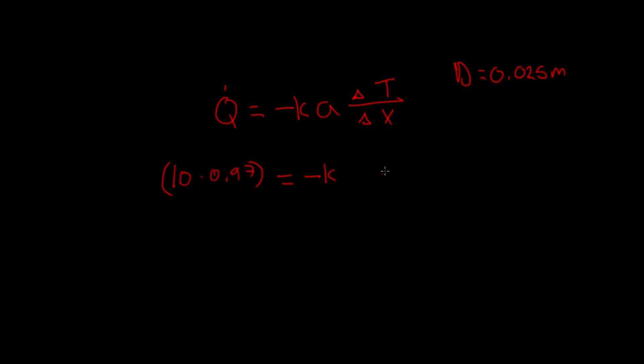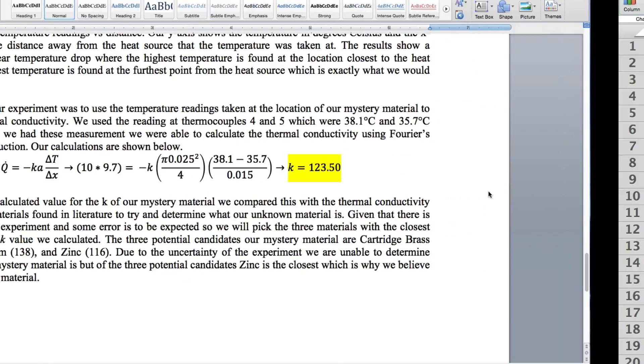Area, we have the diameter, so this is going to be pi times 0.025 squared over 4. Delta T, since this is a linear relationship, we can use any two data points.